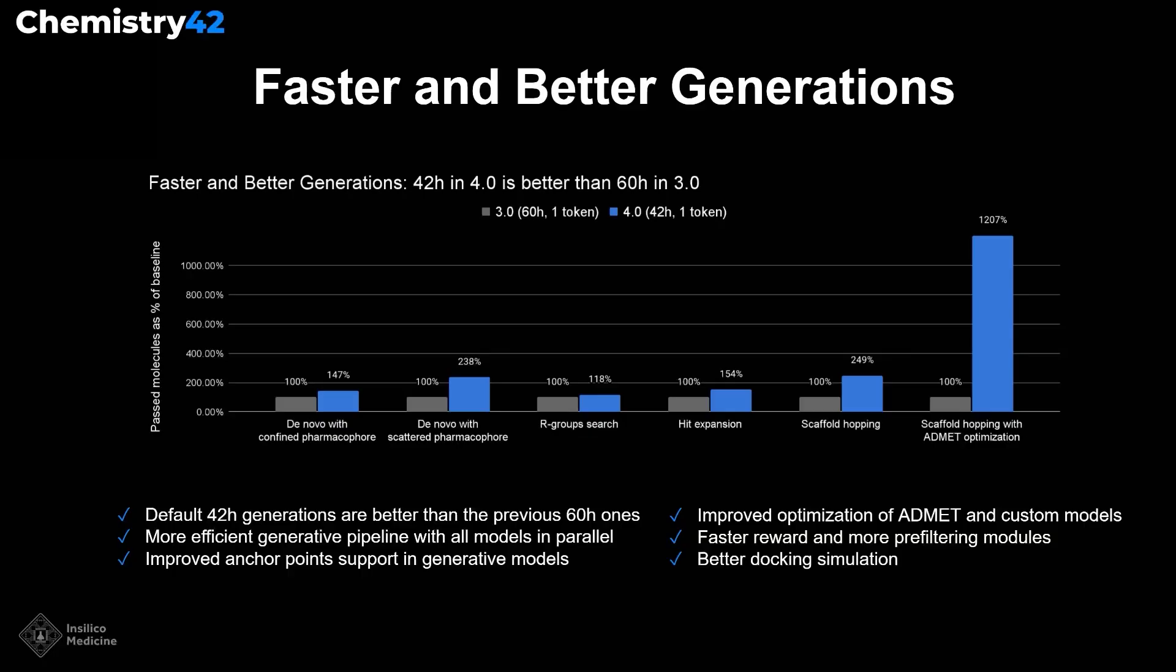With version 4.0, the generations now run faster, 42 hours by default compared to the previous recommendation of 60 hours, allowing you to run more experiments in the same timeframe. We achieved this by allowing the models to dynamically switch between exploration and exploitation modes.